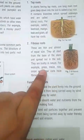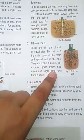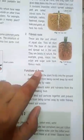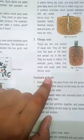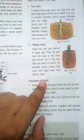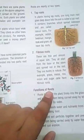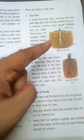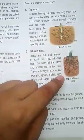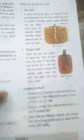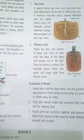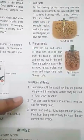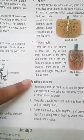Fibrous roots are bushy in nature. Examples include grass, maize, rice, and onion. You should also find out how many plants around you have tap roots and how many have fibrous roots. Find out other examples by practically observing plants around you.